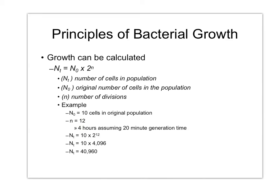So you would have 10 times 2 to the 12th power, which if you plug into your calculator you'll find is about 41,000. That's in four hours. Assuming your E. coli continue to have a generation time of 20 minutes, how many cells would there be in a 24-hour period? Let's even start with just one cell.